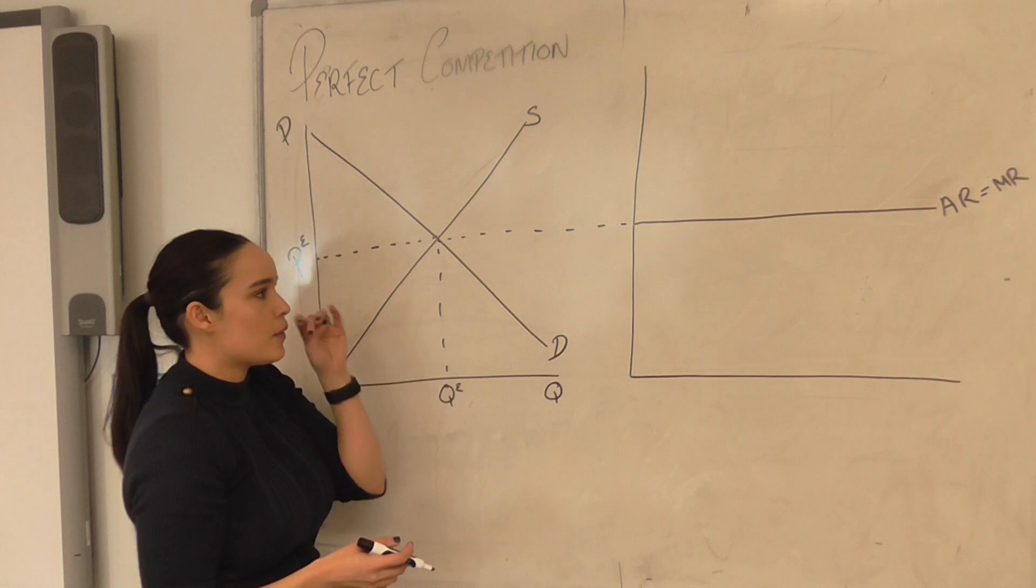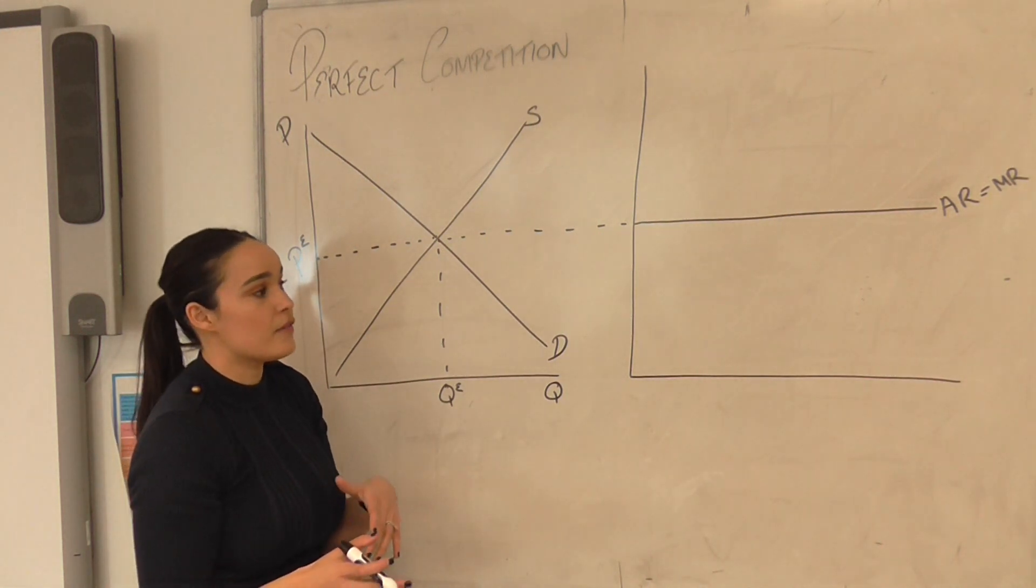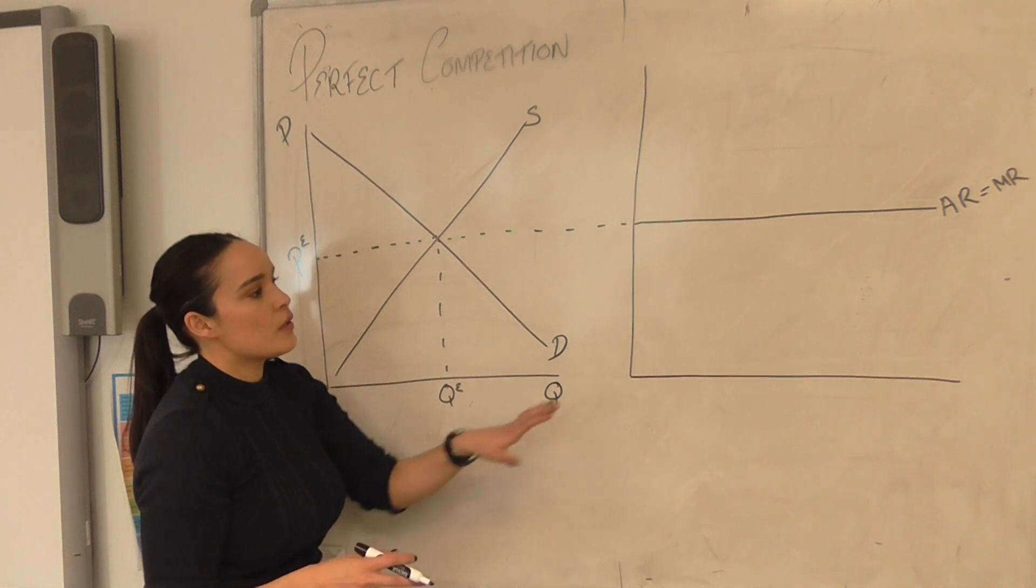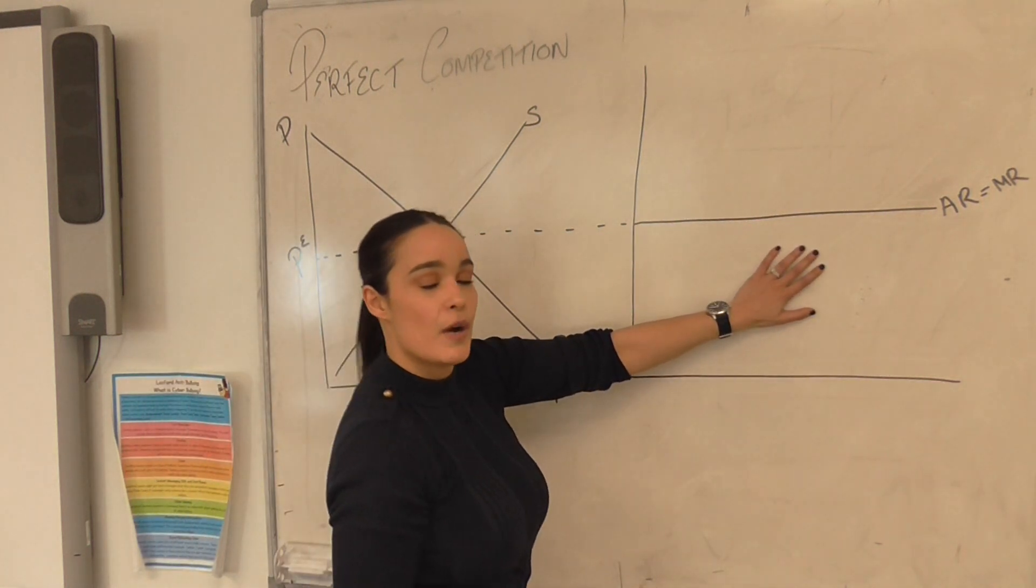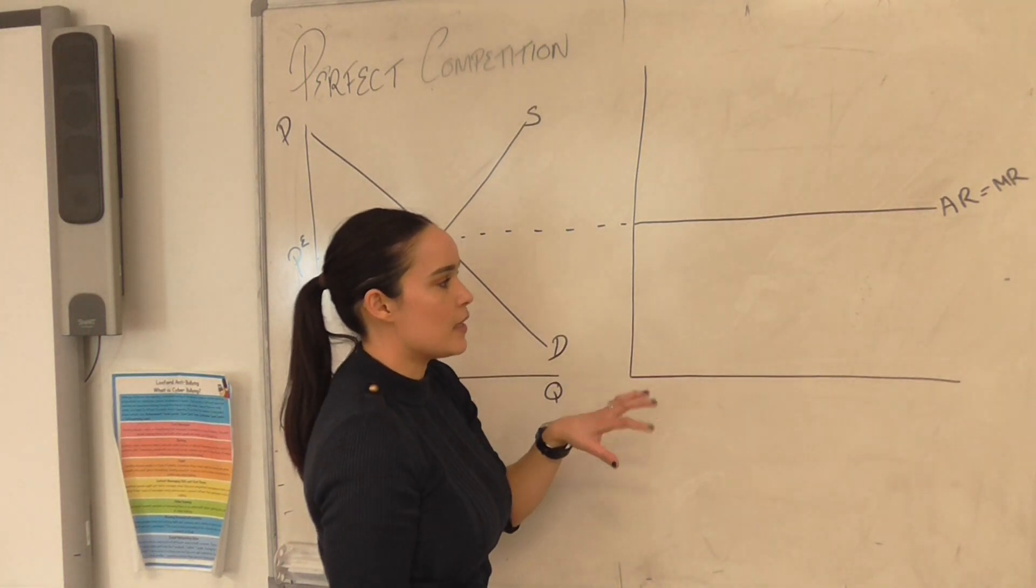So what we're going to do now is have a look at, and I did kind of touch on this in the last video, how firms in the short run may well be able to make supernormal profit and actually what happens over time in the market.